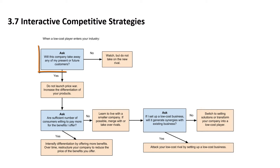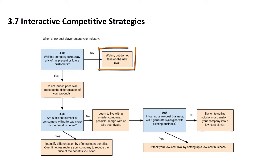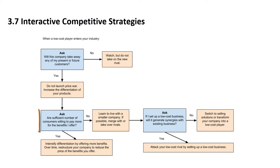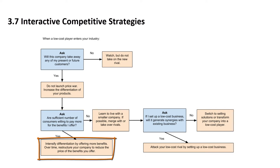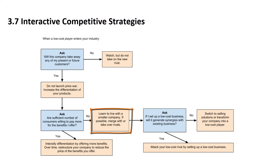First, we start on the top left and ask ourselves: will this company take away any of my present or future customers? If the answer is no, then we should watch but not take on the new rival. If the answer is yes, we should not launch a price war — we should increase the differentiation of our products. We ask ourselves again: are a sufficient number of consumers willing to pay more for the benefits I offer? If yes, we should intensify differentiation by offering more benefits, and over time restructure our company to reduce the price of those benefits. However, if the answer is no, then we should learn to live with a smaller company, and if possible, merge with or take over rivals.